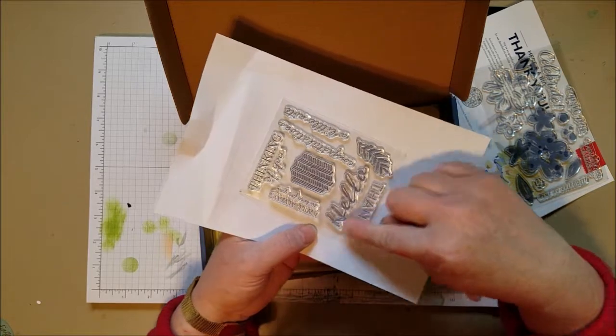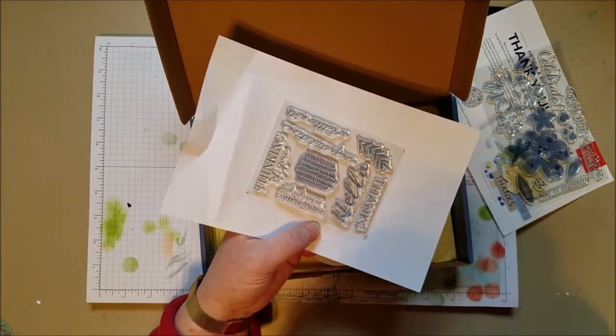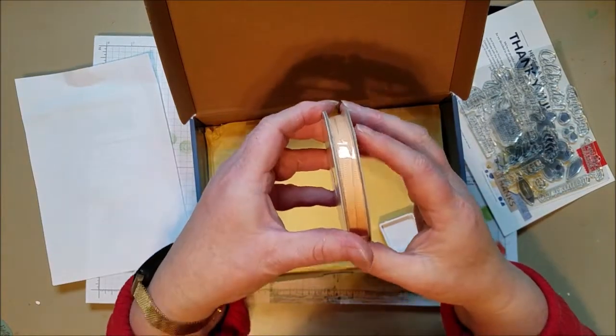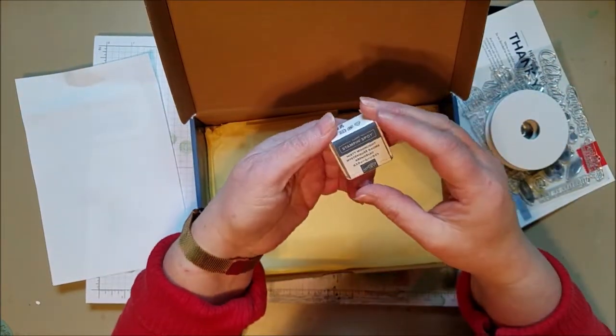I really like this hello. It's nice and big. That'll be nice. Okay, so those are the two stamps. I showed you the ribbon, and our color is Misty Moonlight.